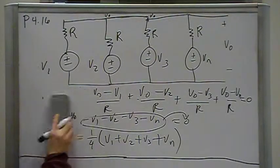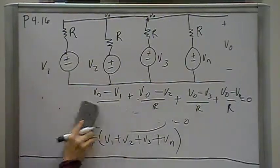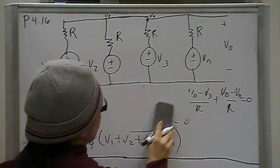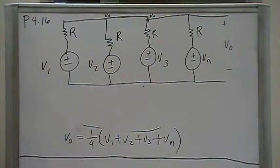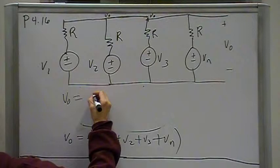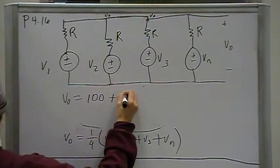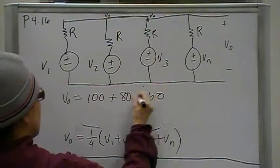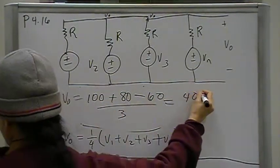For part B, we want to find the voltage Vout. Well, we just proved that if the resistances are identical, it's going to equal the average. So, all we have to do is say Vout equals 100 plus 80 minus 60 over 3. And that is going to give you 40 volts.